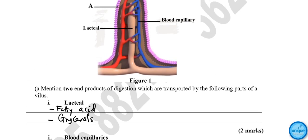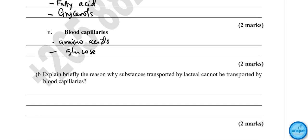The lacteal here forms a part of the lymphatic system. Explain briefly the reason why substances transported by lacteal cannot be transported by blood capillaries. Fatty acids and glycerol are larger molecules, while amino acids and glucose are small molecules.